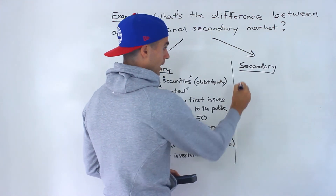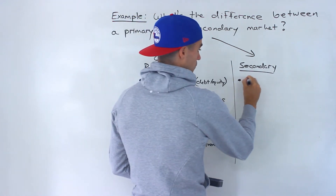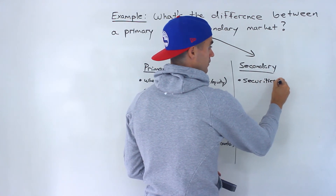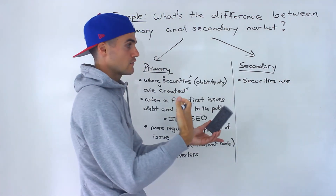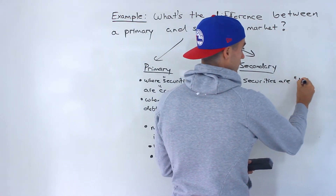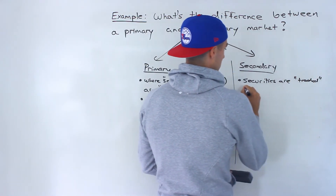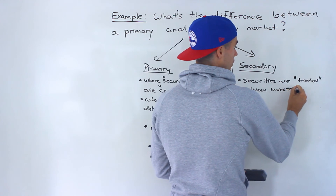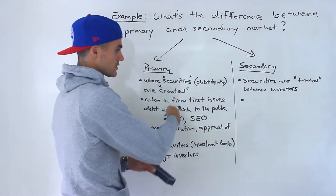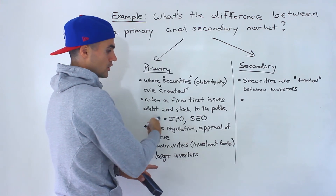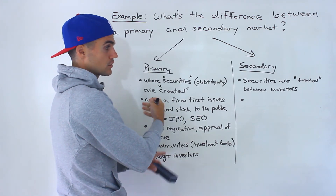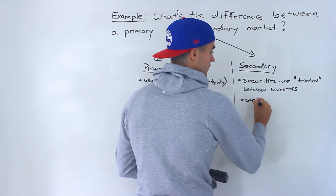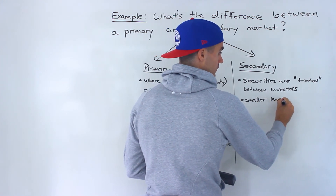And then in a secondary market, what happens is now this is where those securities are exchanged between investors — bought and sold, or let's say traded between investors. So over here, this is where smaller investors come in. Once they're created and that IPO — that initial public offering — goes through, those securities get listed on an exchange and then smaller investors can buy and sell on the exchange.